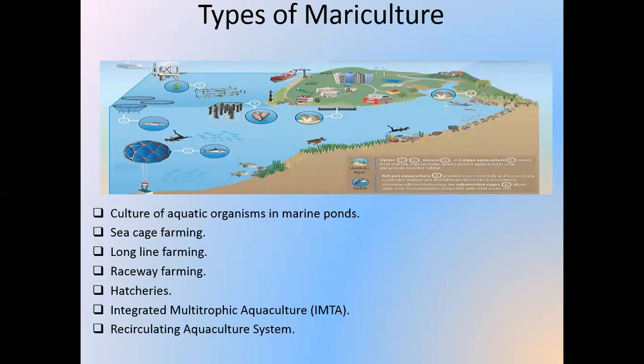Types of mariculture. Marine fishery is associated with the culture of fishes in marine waters. Fishes, being the foremost component of marine food webs, serve as food for marine mammals. Apart from its role in the marine environment, fish also serve as a significant source of protein in human and animal diets for both rural and urban populations. The fisheries sector greatly contributes to providing livelihood to millions of people directly and indirectly, income generation, and foreign exchange. Overall, the marine catch accounts for 17% of global animal protein consumption. Different types of mariculture are practiced in different regions of India, like culture of aquatic organisms in marine ponds, sea cage farming, long-line farming, reservoir farming, hatcheries, integrated multi-trophic aquaculture, and recirculating aquaculture systems.